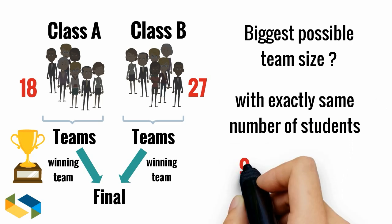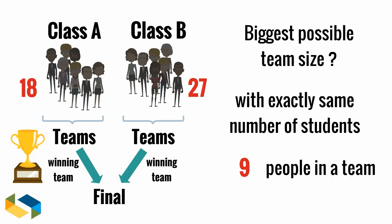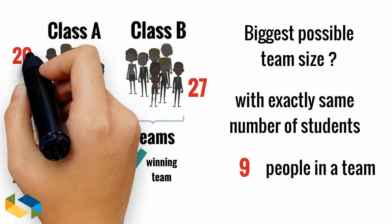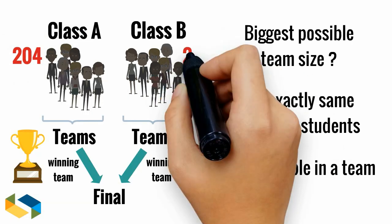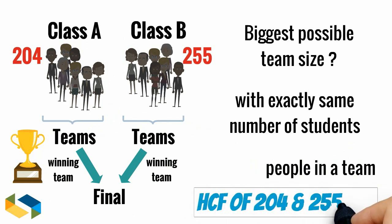Careful observation would tell you that the answer is 9. Easy. But what if class A had 204 students and class B had 255 students? What would be the biggest possible team size then? Well, careful observation may not help here. So use highest common factor. The HCF of 204 and 255 is 51. So the team would be 51 students each.